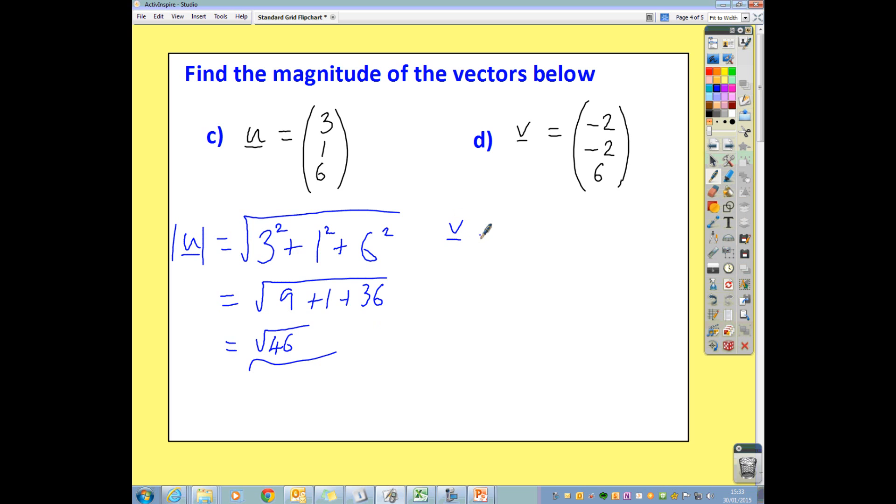For this one, being careful because we have some negative components, the magnitude of v is going to be negative 2 all squared, plus negative 2 all squared, plus 6 squared. So what's that? That's the square root of 4, plus 4, plus 36, which is this time the square root of 44.